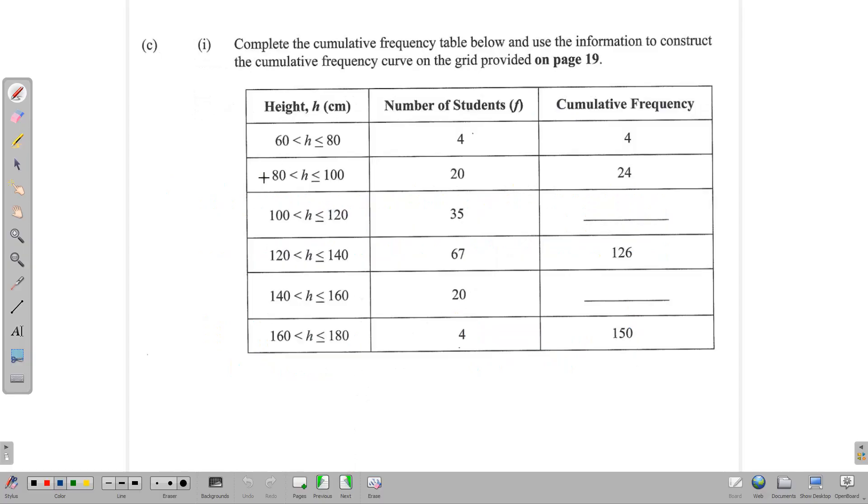Moving on. The part C has to do with cumulative frequency. So here we have a cumulative frequency table, and we are to fill in two missing values again. So 4 and 20. So usually we start with the first one. Then we add 4 plus 20 gives us 24, and 24 plus 35 here would land us at 59. And that's how we find them. 59 plus 67 gives us that. And so 126 plus 20 gives us 146. And we have completed it by filling in the two missing values.